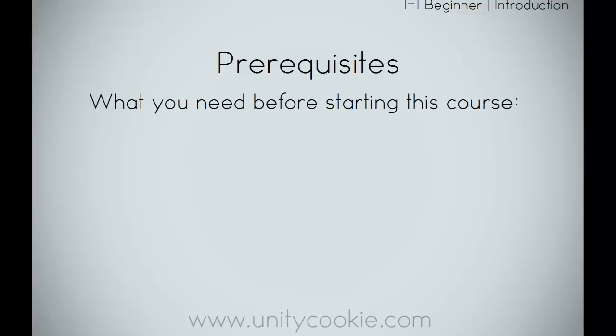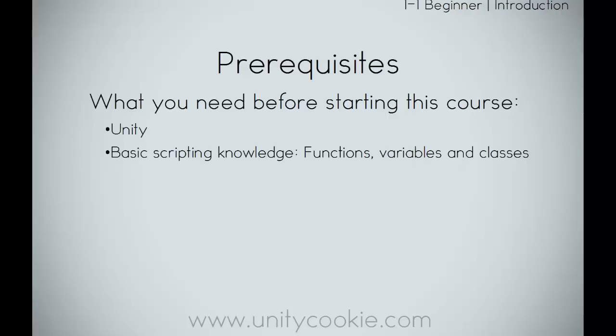Prerequisites — things you will need to know and have before starting this course. You'll need a copy of Unity 4 and the basics of how to use it. You don't need to know how to make levels or animate objects — just how the interface works. If you have followed Introduction to Unity on unitycookie.com, you have more than enough knowledge. You will also need some basic scripting knowledge: functions, variables, and classes. If you've never programmed before that's fine, though you might find it a little difficult, especially when we get into structs and classes. Check out our Introduction to Scripting tutorial on unitycookie.com — it's short and gives you the fundamentals you'll need.